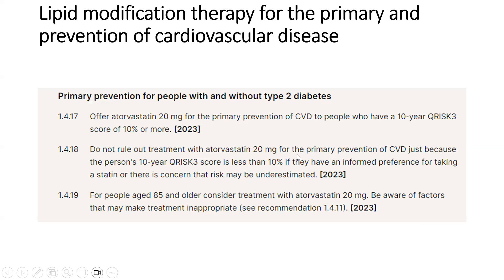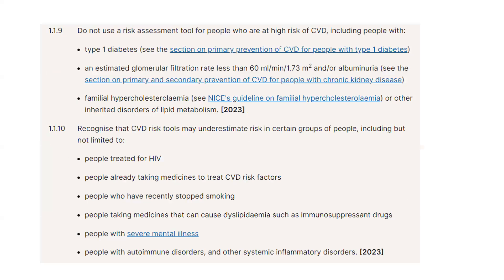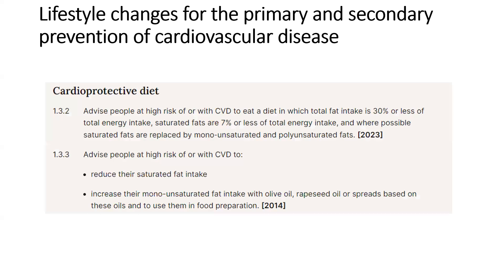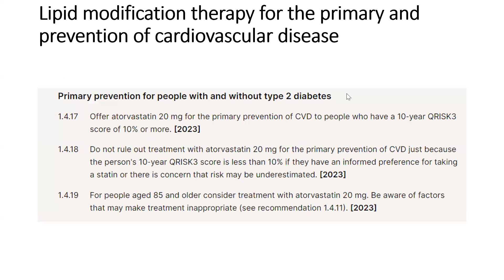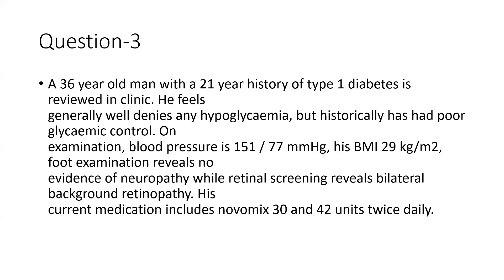Do not rule out treatment with atorvastatin 20mg for primary prevention just because a patient's 10-year risk score is less than 10%, if they have an informed preference for taking a statin or there is concern that risk may be underestimated. For special populations where risk may be underestimated, keep a low threshold. People aged 85 and older are already at high risk and should be offered atorvastatin 20mg.